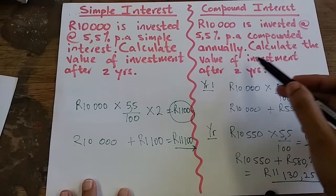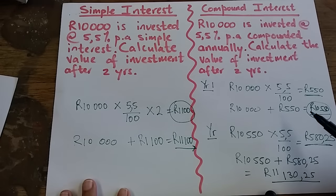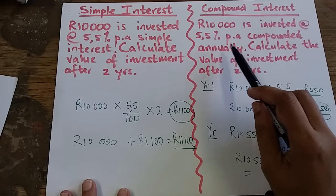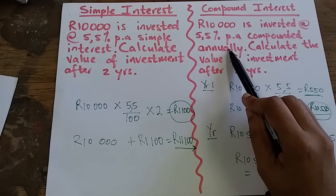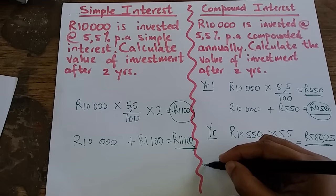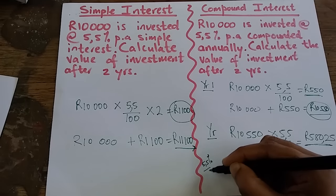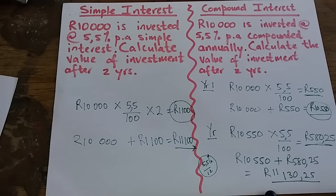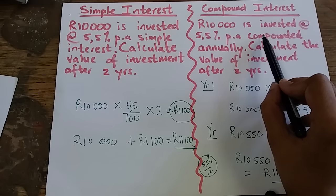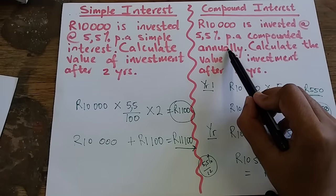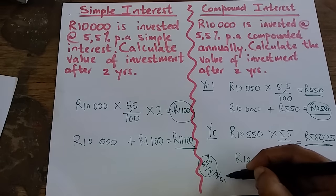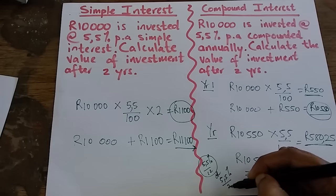Also under compound interest: if the 5.5% per annum is compounded monthly, the bank calculates interest every month, so we divide 5.5% by 12 to get the monthly interest rate. If the question says 5.5% per annum compounded half-yearly — meaning every six months — then we divide 5.5% by 2.